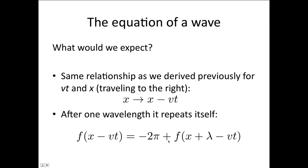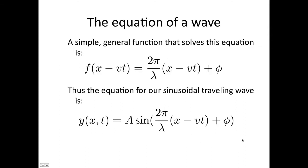We would expect that if x progressed by one wavelength — so in time that would be one period — then it's going to be an additional 2π on. So we would expect the relationship: f of x minus vt is equal to f of x plus lambda minus vt, plus 2π. And a simple general function that solves this equation is if we let f of x minus vt be 2π over lambda times (x minus vt) plus phi. You can just substitute this into that equation to prove that.